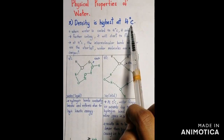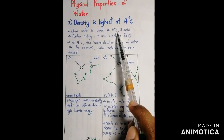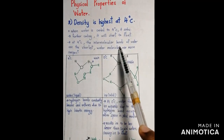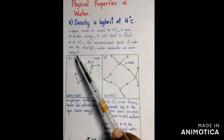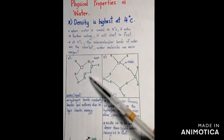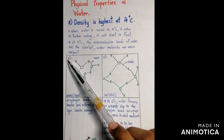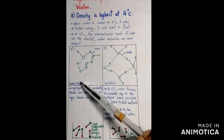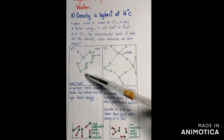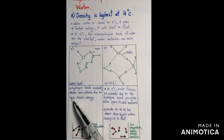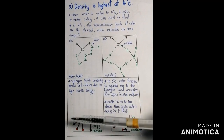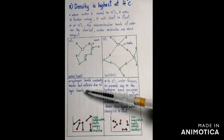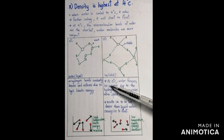Water is densest at 4°C. When water is cooled to 4°C it sinks, but on further cooling it starts to float. At 4°C, the intermolecular bonds of water are the shortest and water molecules are most compact. In liquid state, hydrogen bonds are weak because they constantly break and reform due to high kinetic energy — the higher the temperature, the greater the kinetic energy causing hydrogen bonds to constantly break and reform.